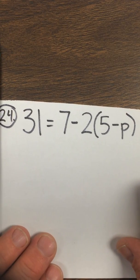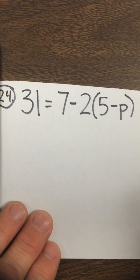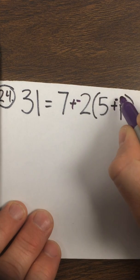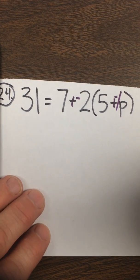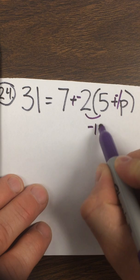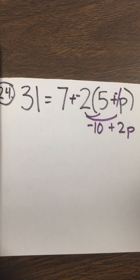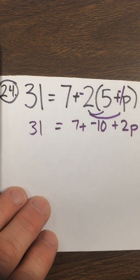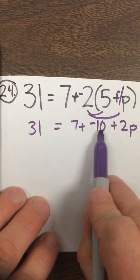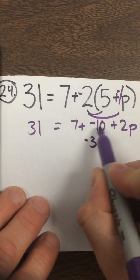Number 24 is 31 equals 7 minus 2 times the quantity 5 minus p. Leave change opposite, and if you want to, put in that understood 1. Distributive property becomes negative 10 and positive 2p. I still have this plus 7, and I still have this 31. So all I've done is distributive property to get this out. These two are like terms, so I can combine them — that would be negative 3 because of the sign of the larger.